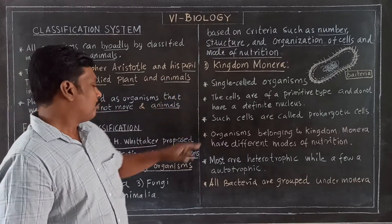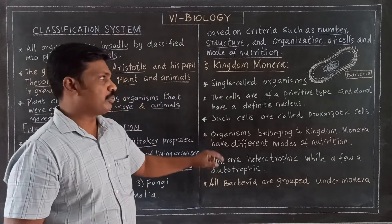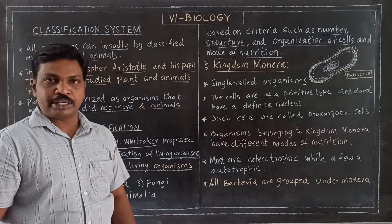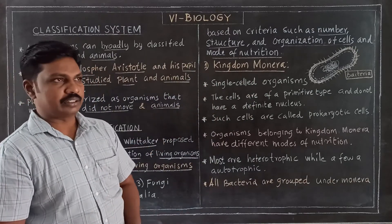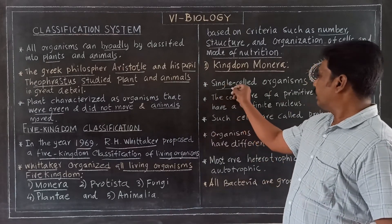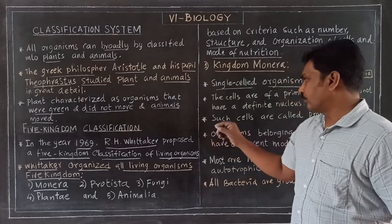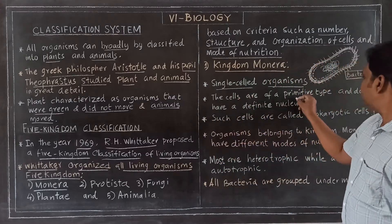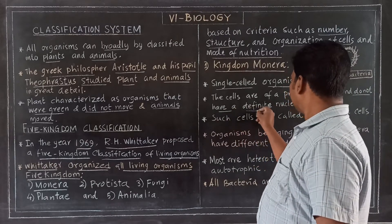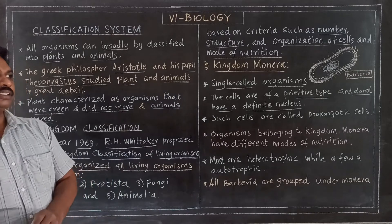The first kingdom is Monera. Monera includes maximum microorganisms. These are single-celled organisms. The cells are primitive types and do not have a definite nucleus.